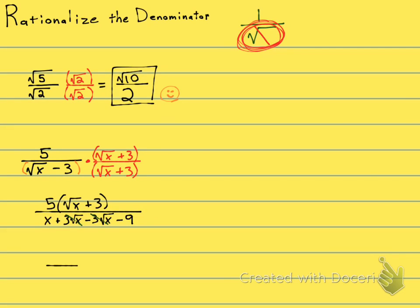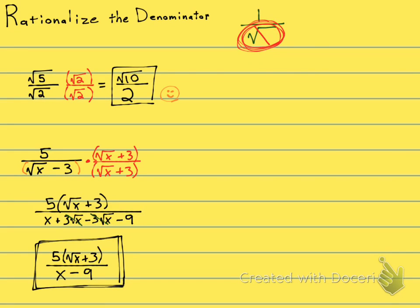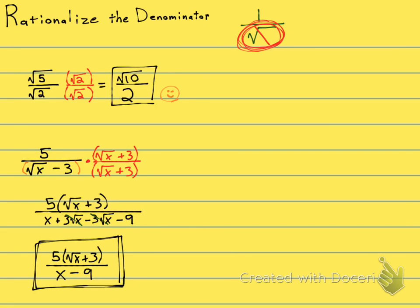So my answer is going to be 5 times the square root of x plus 3, over x minus 9. You can stop right here — you don't need to distribute out the numerator. There's no more radical in the denominator, and that makes your math teacher happy. Remember: if you see a radical in the denominator and it's just one term, multiply by the same thing. If you see a radical in the denominator that is two terms, multiply by the conjugate.